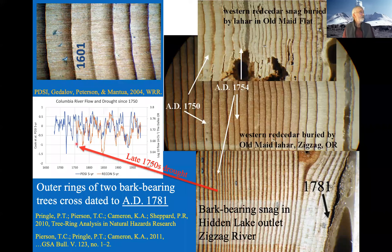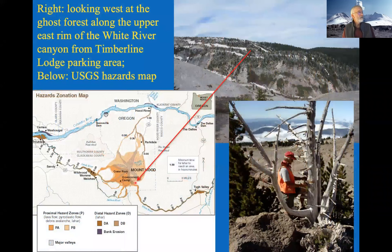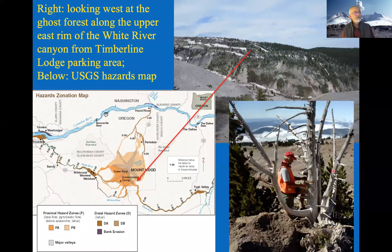Lahars—volcanic mudflows—from Mount Hood also went down the White River all the way to the Deschutes River. I have one sample from a lahar in which I found the 1601 light ring with an outermost ring of 1781, suggesting this lahar was part of the same major eruption from Mount Hood. There's also a ghost forest up there that radiocarbon dates to roughly the same time; we've had difficulty cross-dating the old whitebark pines, but we'll keep trying.